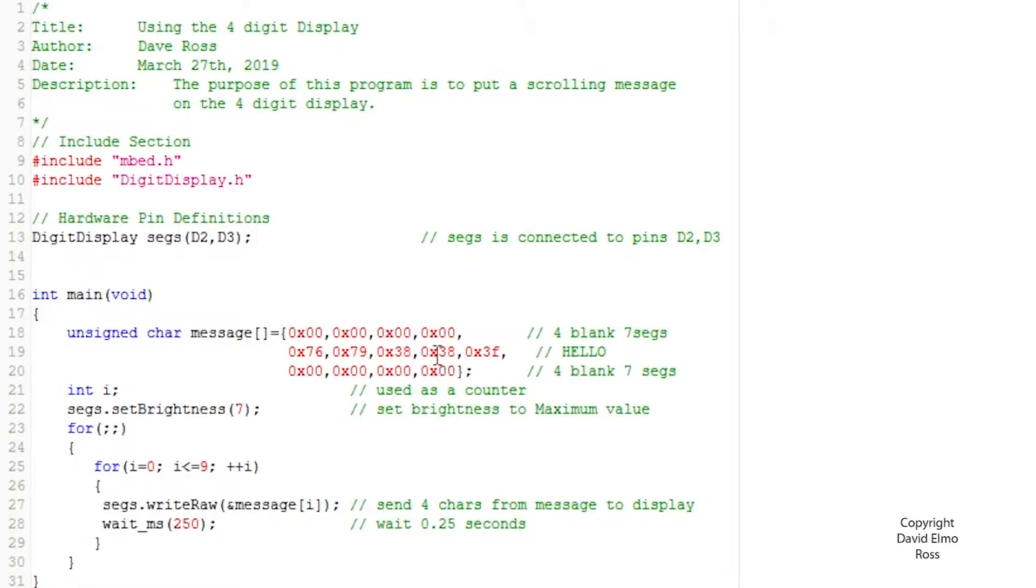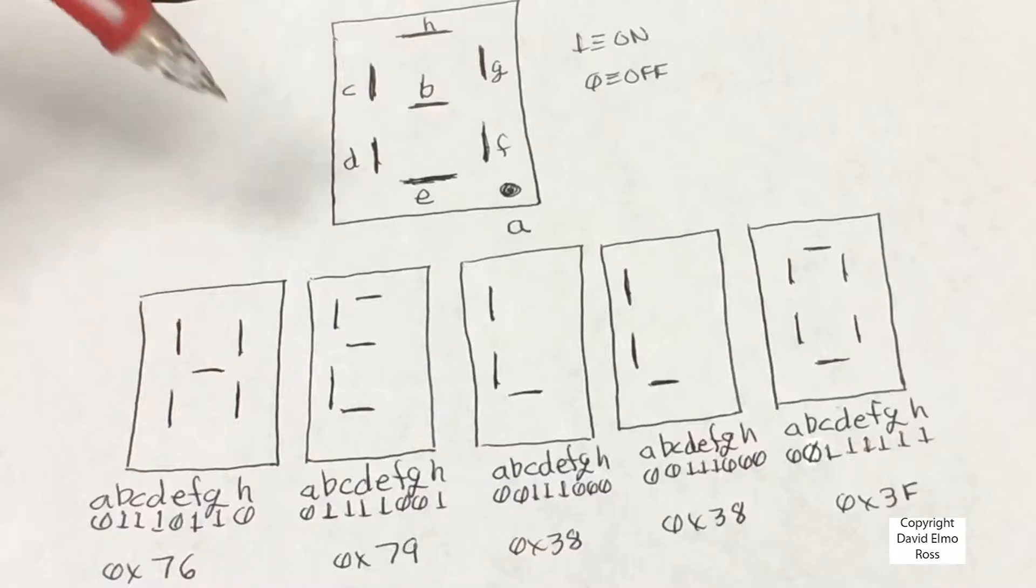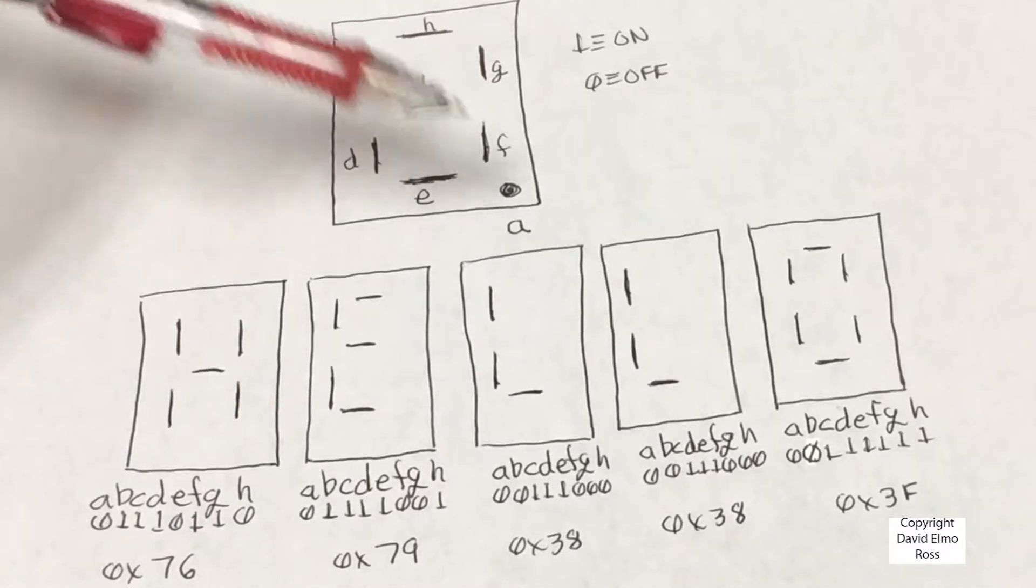This is a program that's going to display on our four-digit display the word Hello scrolling across the screen. Now each seven-segment display has seven segments which are really just stretched LEDs plus a dot.